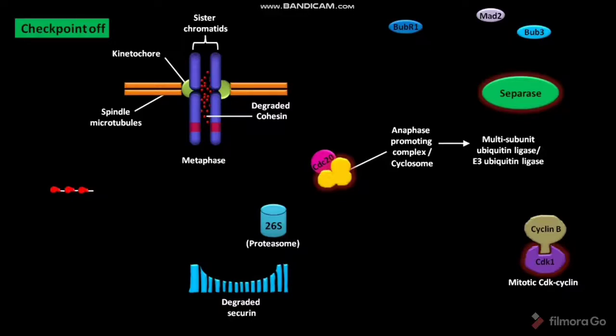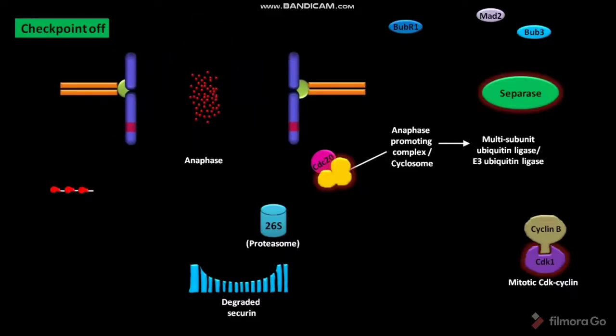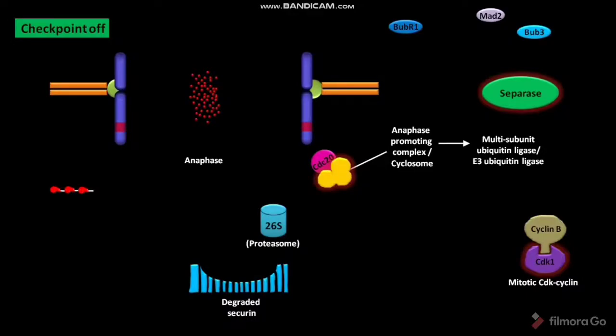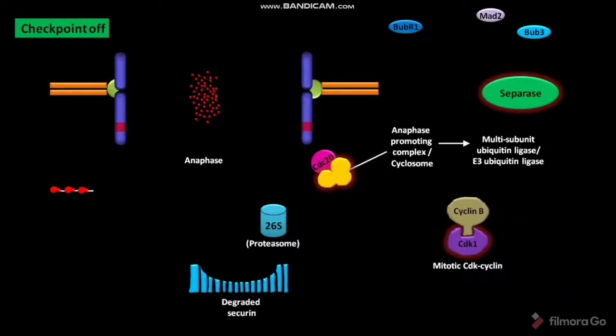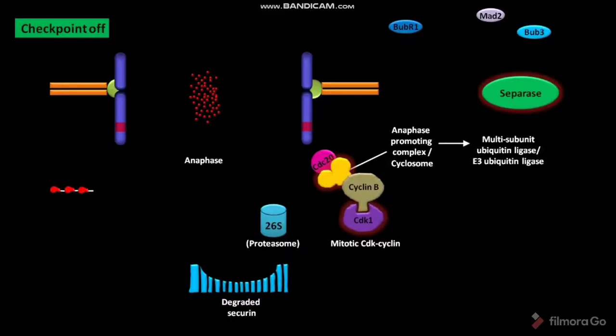As a result, the sister chromatids move to opposite poles of the spindle. As a result, the sister chromatids separate. The mitotic CDK-cyclin complex then binds to the active cyclosome. The active cyclosome then catalyzes the ubiquitination of cyclin B.